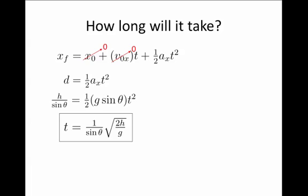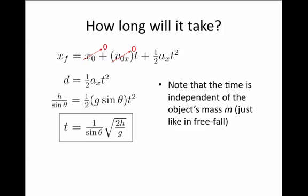That looks like an awfully complicated expression, but it's helpful to think about some limiting cases. Notice that the time to fall from a certain height doesn't really depend on the object's mass. This is a lot like the case of free fall, when we would drop things from a certain height, and we would see that the time to fall didn't depend on whether it was a feather or a hammer or a bowling ball. The mass just canceled out.